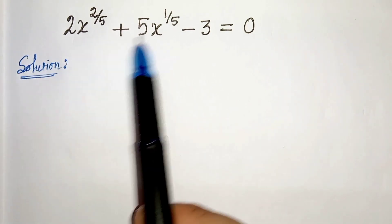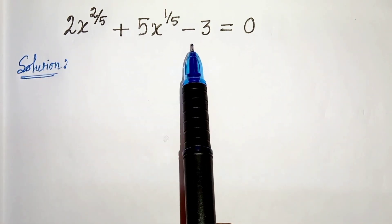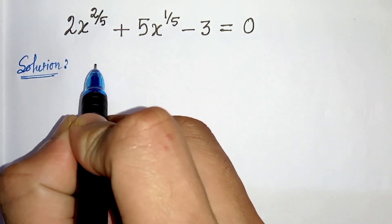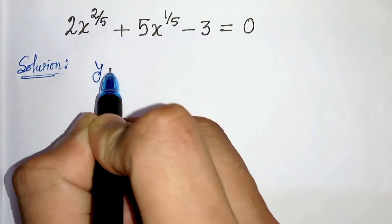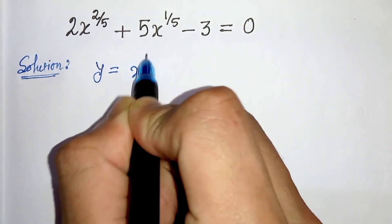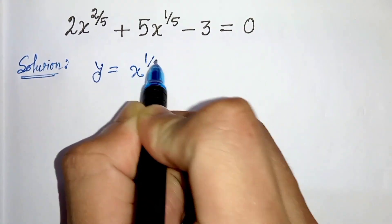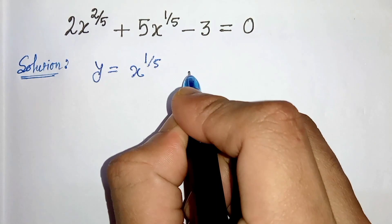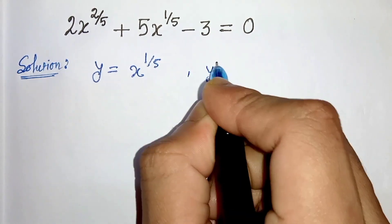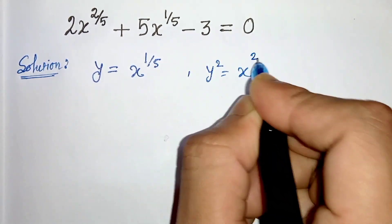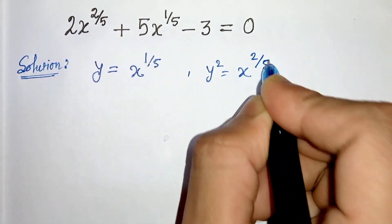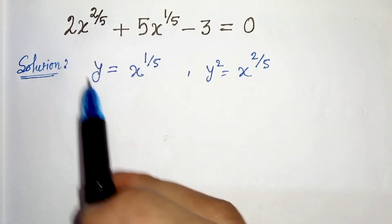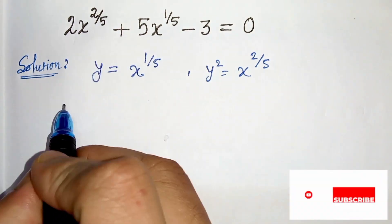This equation is solved as a quadratic equation if we let y equals to x to the power 1 by 5, then we can write y squared as x to the power 2 by 5. Now let us replace this in our main equation.